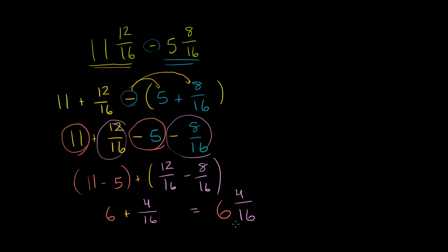And this is the right quantity, but we can simplify it. 4 over 16 can be simplified. Both the numerator and the denominator are divisible by 4—they both have the factor 4.